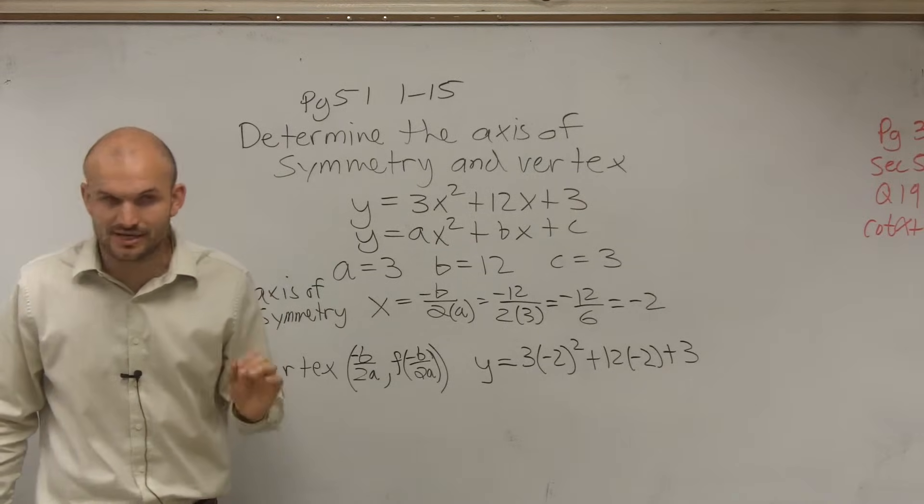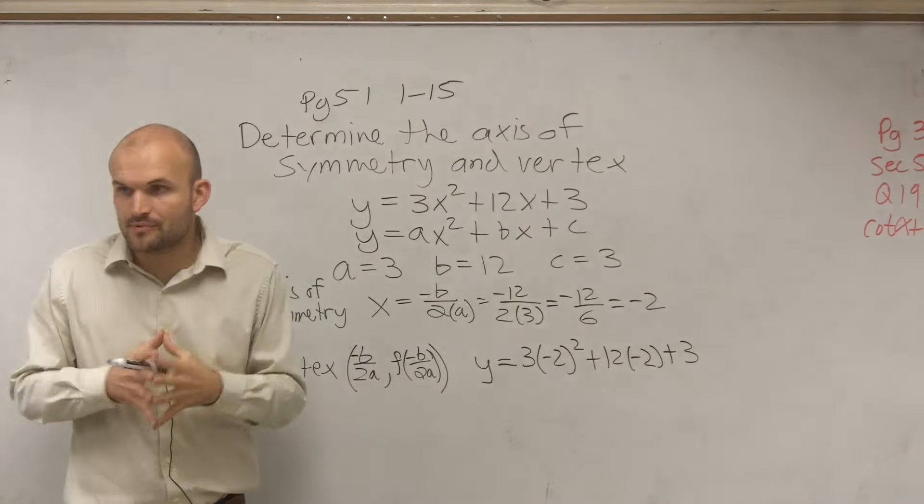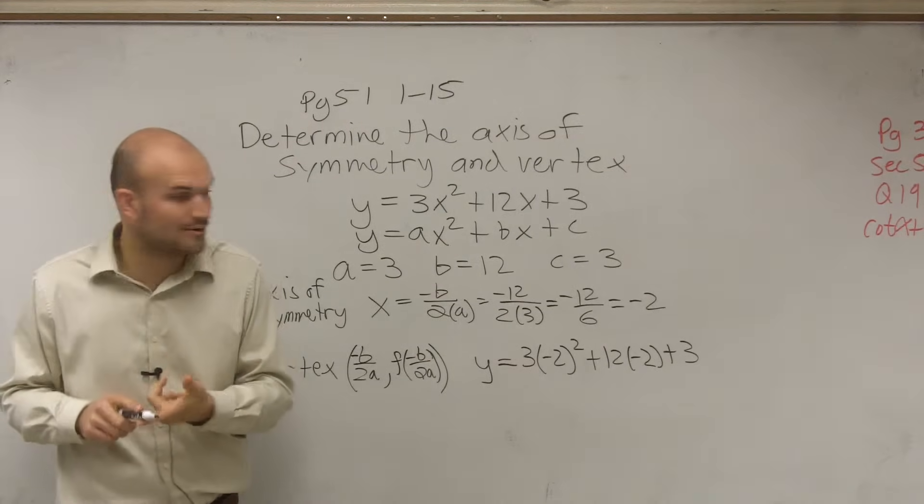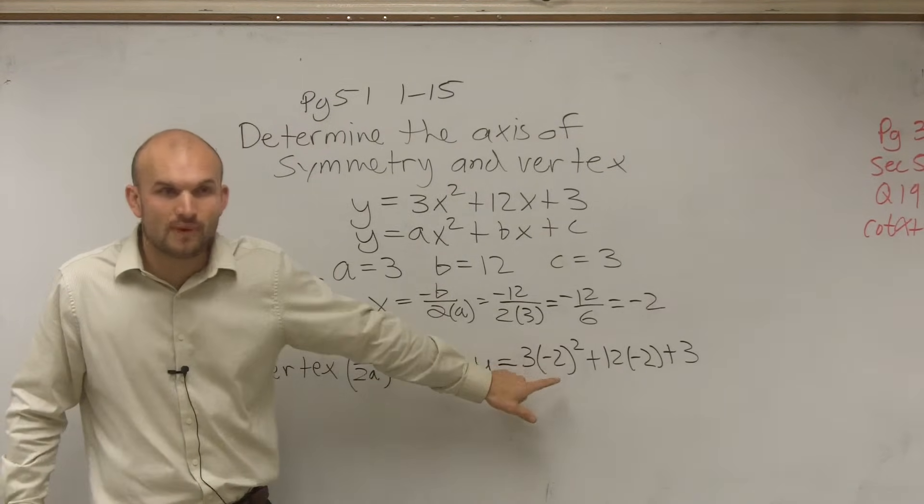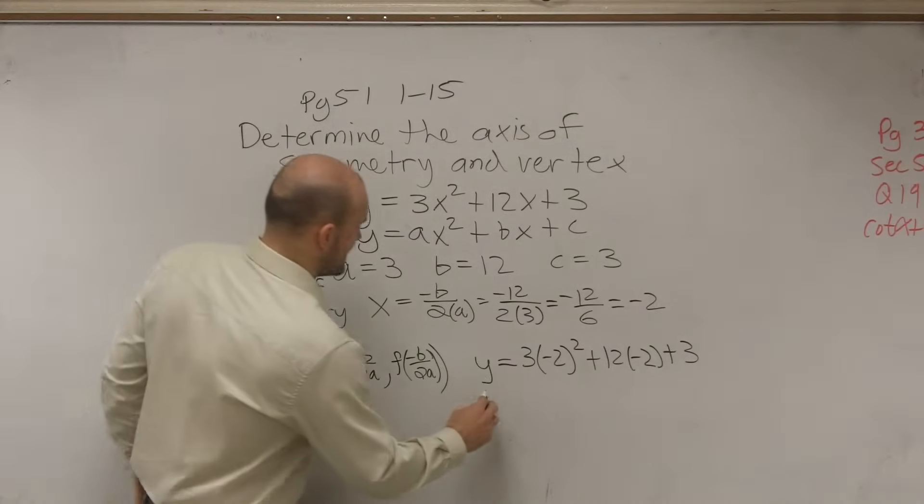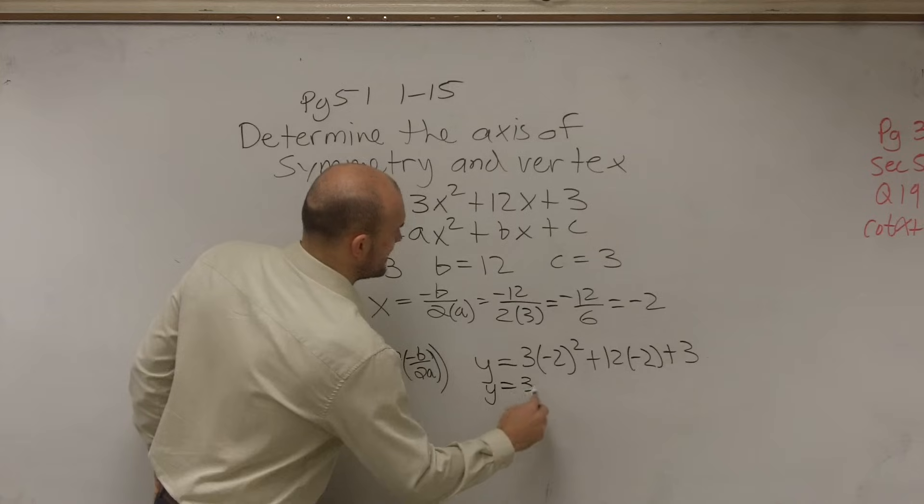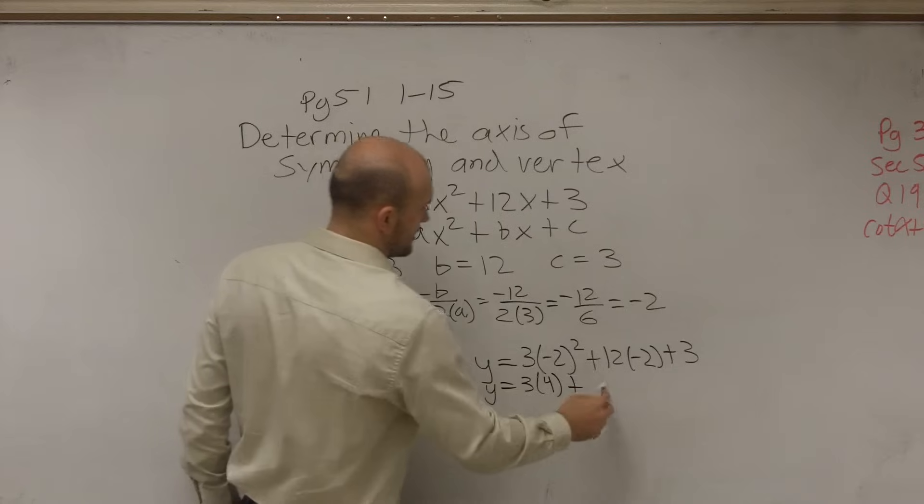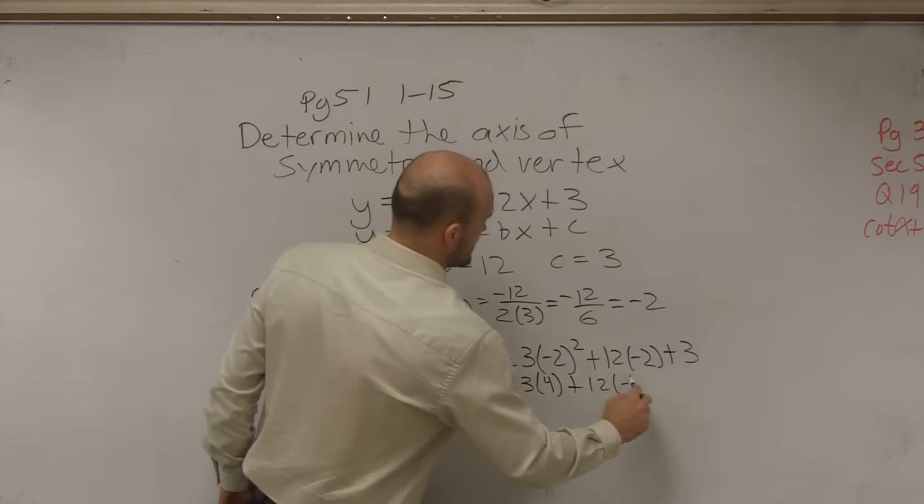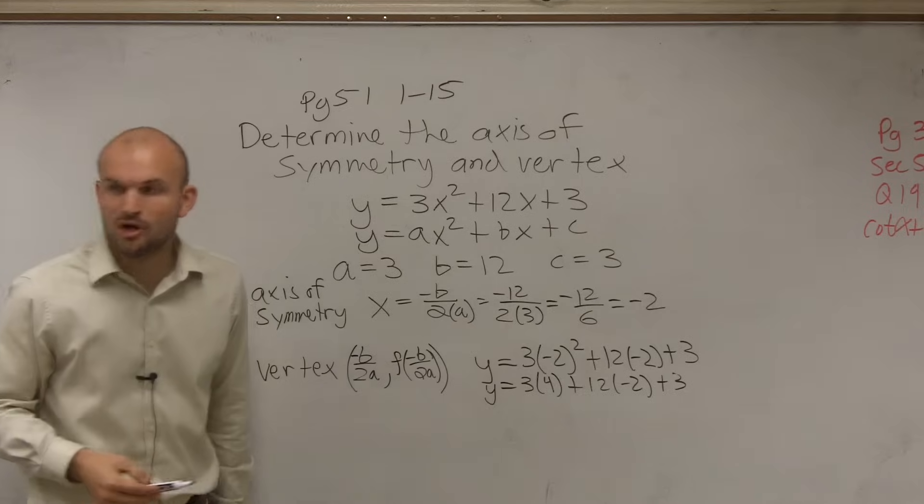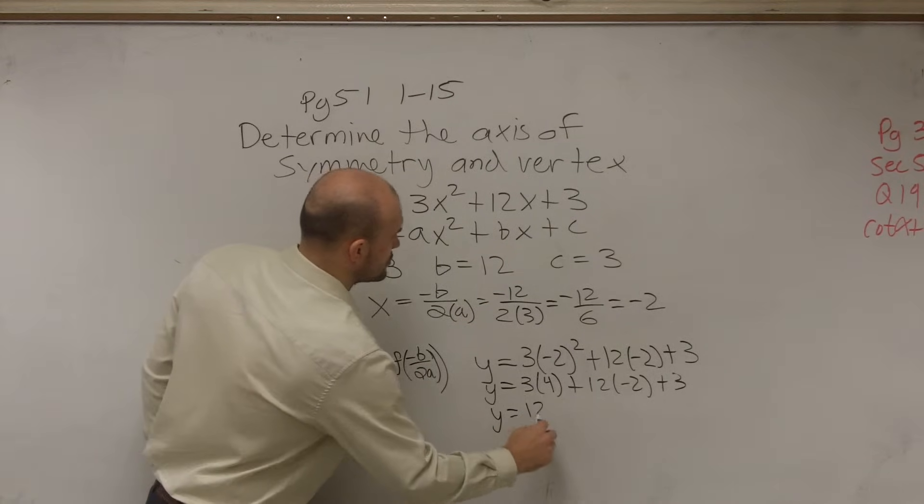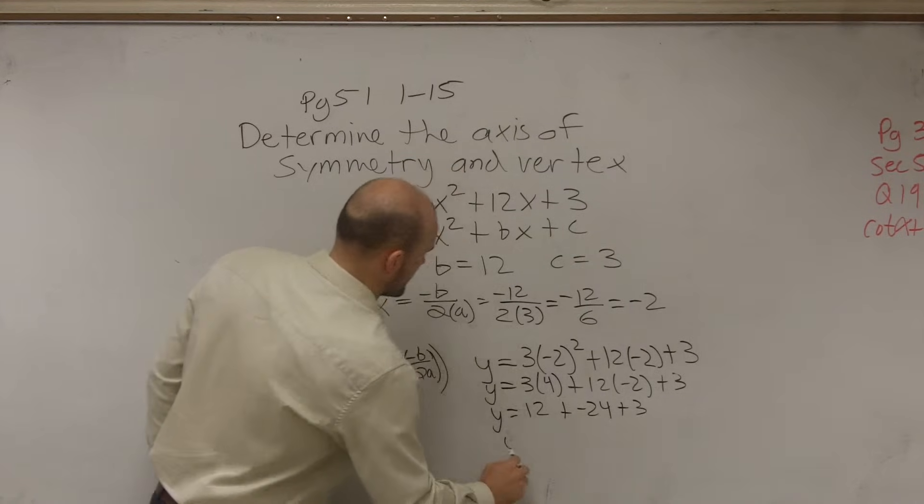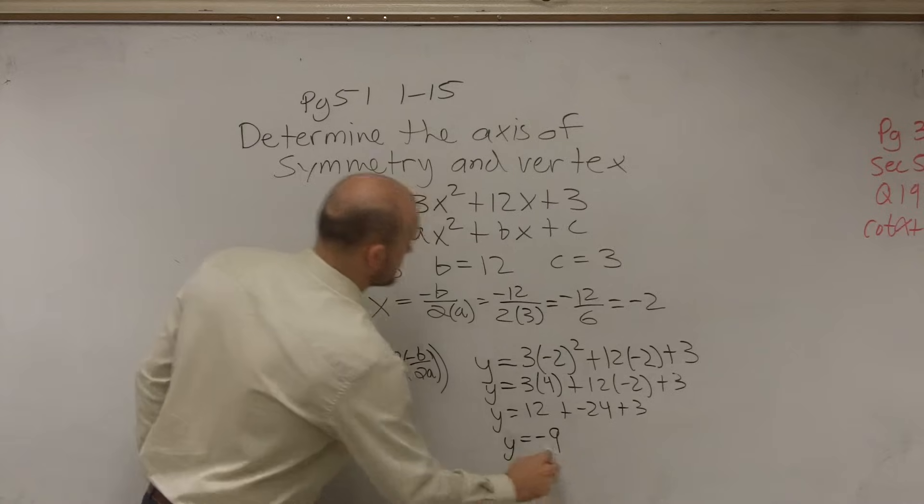Order of operations, parentheses or grouping terms first, then exponents and powers. Ladies and gentlemen, you have to square this first. So it's going to be y equals 3 times 4. Plus, you can multiply those, which would be 12 times negative 2 plus 3. Now, you do multiplication and division. y equals 12 plus negative 24 plus 3. Therefore, y equals negative 9.